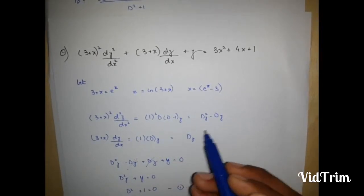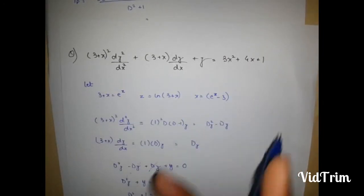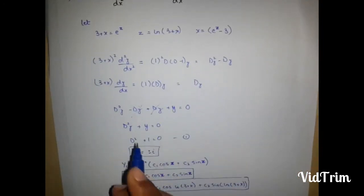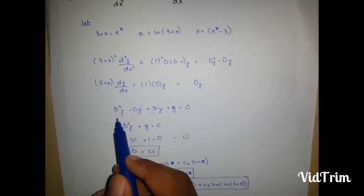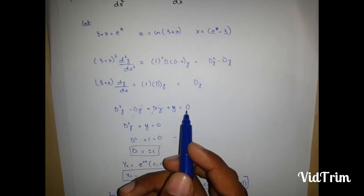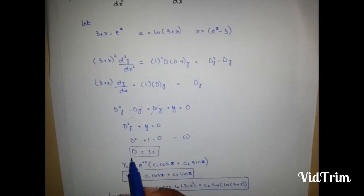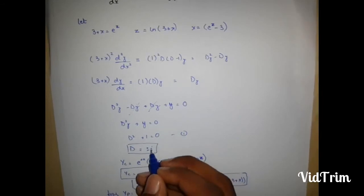Put these two in replace of these in the question. Our equation becomes d square minus dy plus dy plus y is equal to 0. These two are cut with each other, so d is equal to plus minus iota.